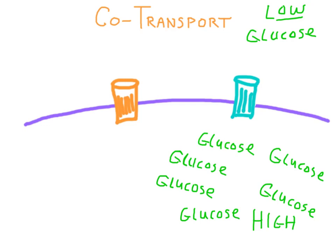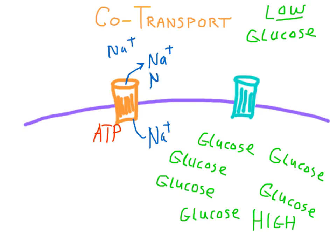Over here at this transport protein, the cell is going to use ATP to pump sodium ions against the concentration gradient. That means we have a lot of sodium on the outside and not very much sodium on the inside — that's why we need the ATP. It's like canoeing upstream on a river. So we still haven't brought in any glucose; we've only pumped out sodium ions.